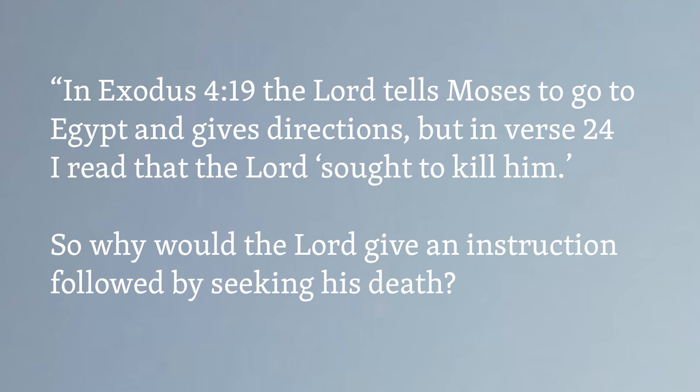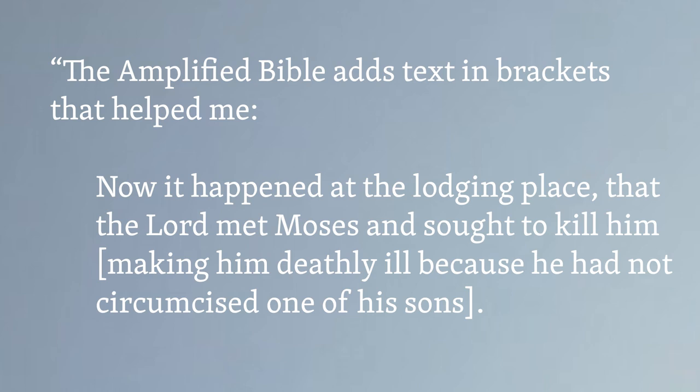So why would the Lord give an instruction followed by seeking his death? The Amplified Bible adds text in brackets that helped me: 'Now it happened at the lodging place that the Lord met Moses and sought to kill him [making him deathly ill] because he had not circumcised one of his sons.' Of all the versions I went to, this was the only one that added the reason. Accurate, you think?